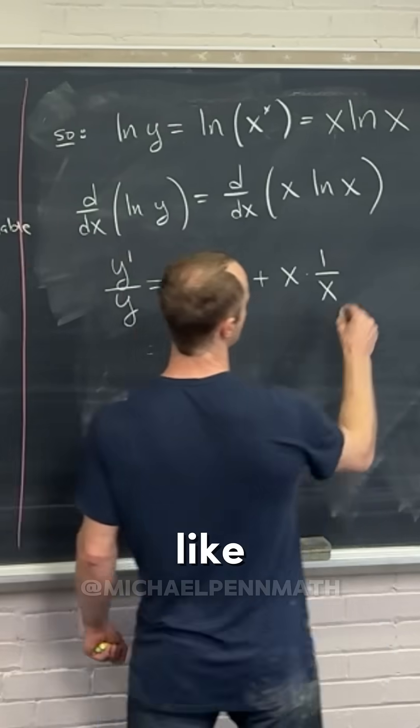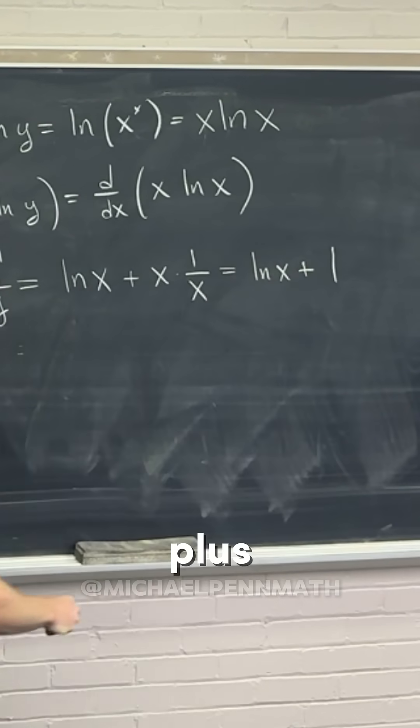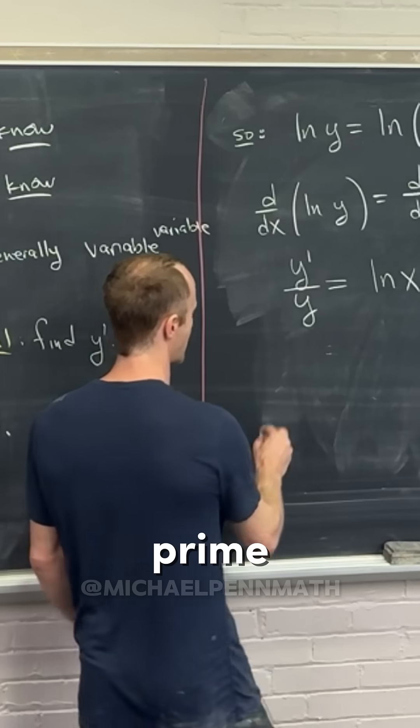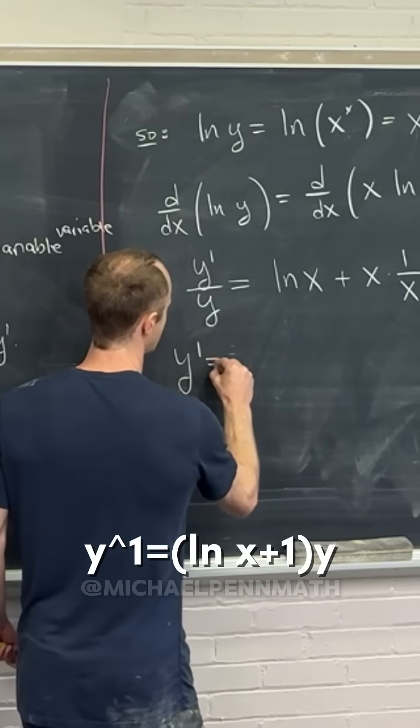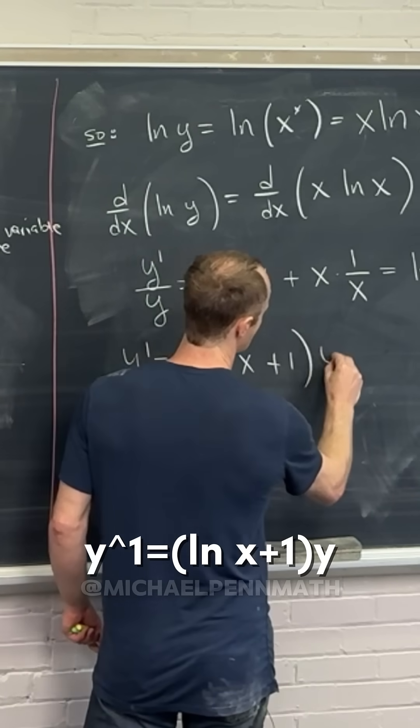So that's our product rule. But check it out, that simplifies pretty quickly to ln x plus one. But now what we want to do from there is solve for y'. So we have y' equals, I'm going to write this as ln x plus one times y.